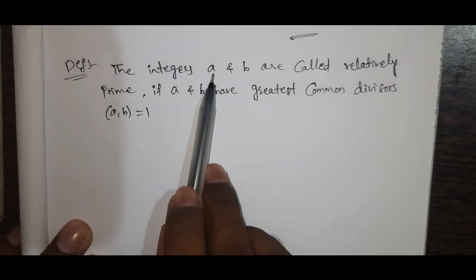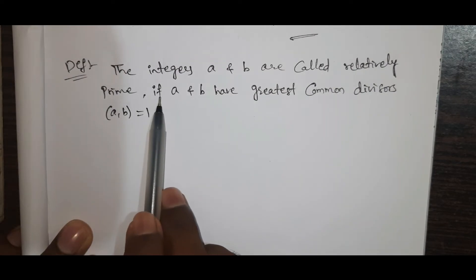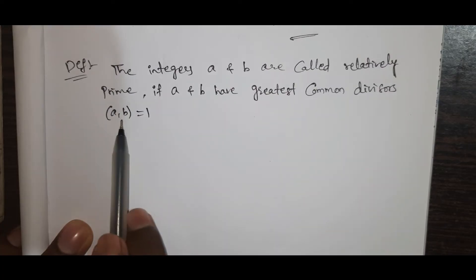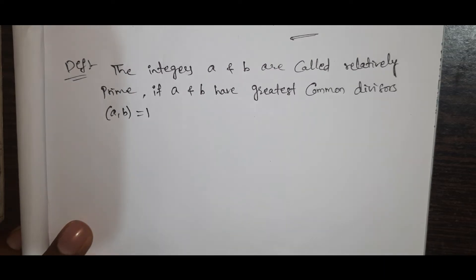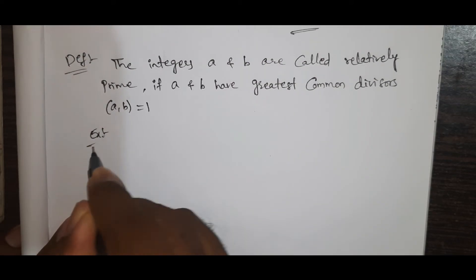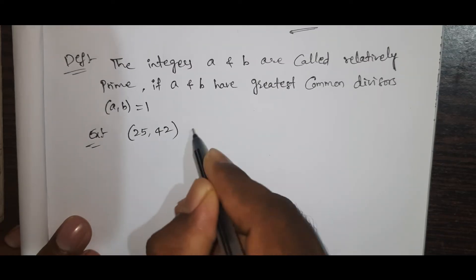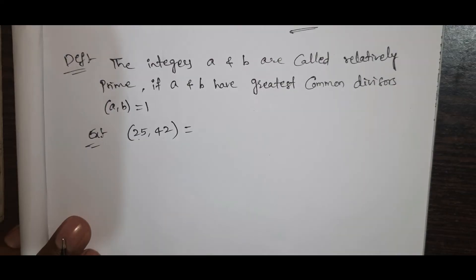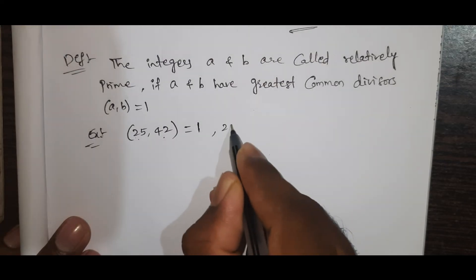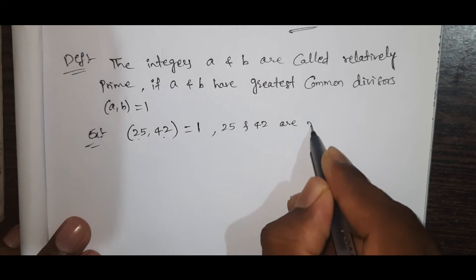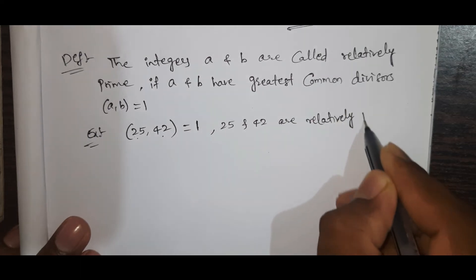The integers A and B are called relatively prime if GCD(A, B) is equal to 1. The integers A and B equal to 1 is a relative prime. For example, GCD(25, 42) equals 1 — since 25 equals 5 squared and 42 is even, they share no common factors, so GCD(25, 42) equals 1.